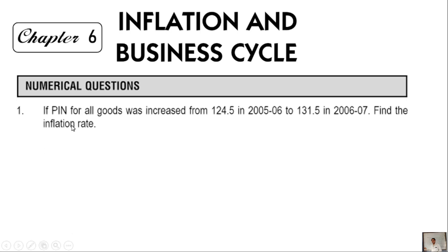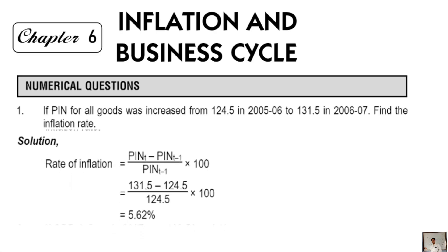Question 1: If the PIN for all goods was increased from 124.5 in 2005-2006 to 131.5 in 2006-2007, find the inflation rate. The formula for rate of inflation is: (PIN current year minus PIN previous year) divided by PIN previous year, into 100.